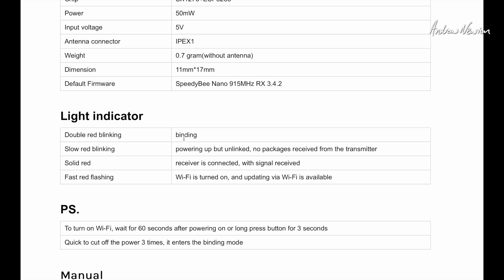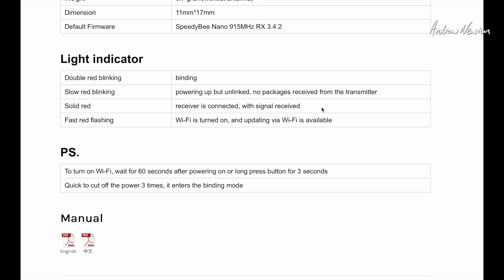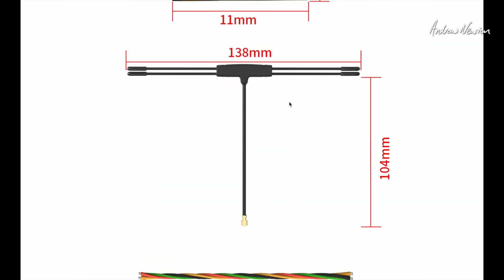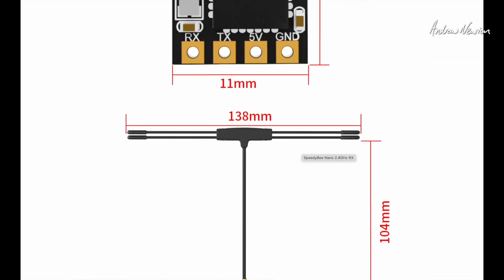And double blinking red means it's in binding mode. Slow blinking red means it's powered up, but transmitter isn't turned on. Solid red means it is connected and signal received. I'll show you how to bind it up next. Fast red flashing means the Wi-Fi mode is on. The manual just is exactly the same thing as this stuff. There's nothing extra. So no point looking at that at this stage.